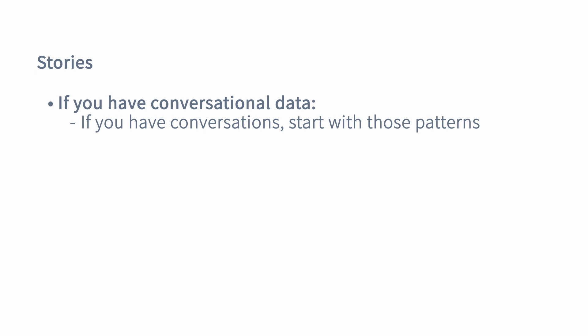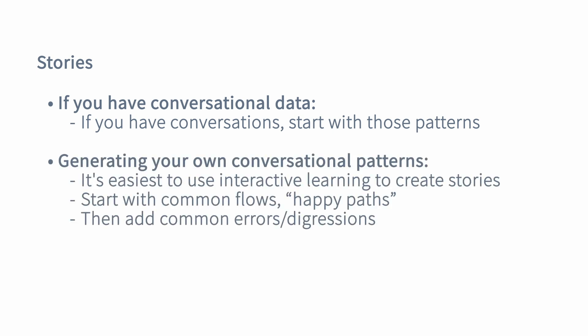So how do you get these patterns? If you already have conversational data, start with the patterns you see there. If you don't — which is very common, particularly if you're prototyping — the easiest way is to use interactive learning. We have a command-line interface tool to do interactive learning where you pretend to be both the assistant and the user, have conversations back and forth, and save those patterns. That tool is available in RASA Community Edition. Start with the most common flows first.